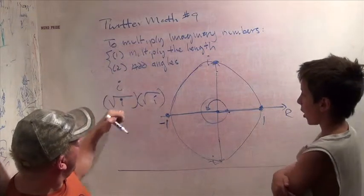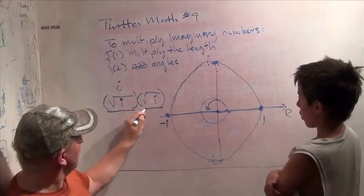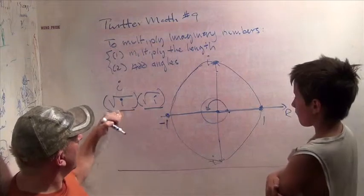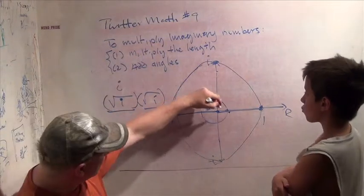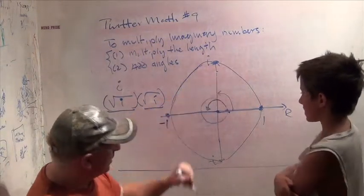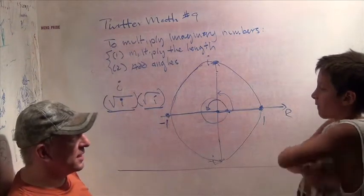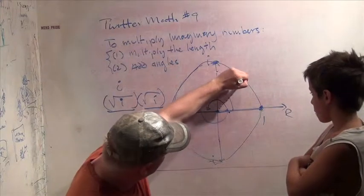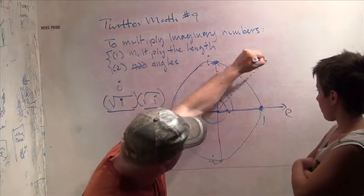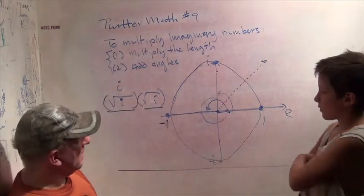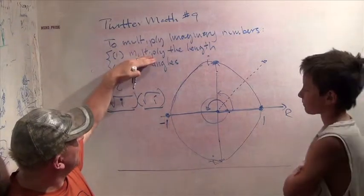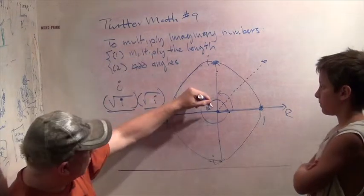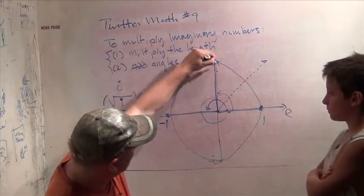So when I add the angles for this number, whatever the angle is, when I add 2 of it, I have to get - what's this angle here? That's 90 degrees. So what angle when I add 2 of it together do I get 90 degrees? 45 degrees. So it looks like I'm going to get something going on a 45 degree angle here.